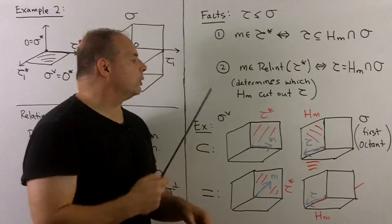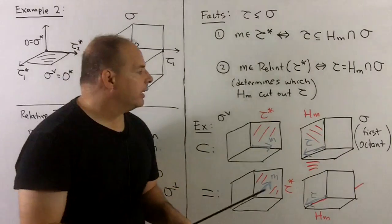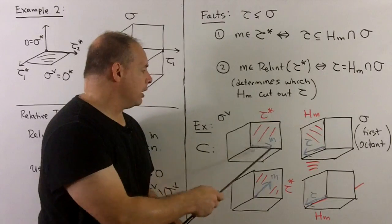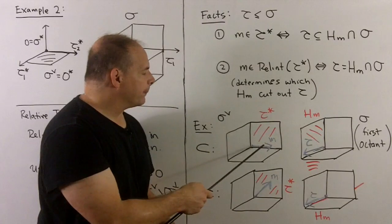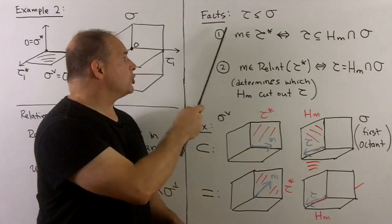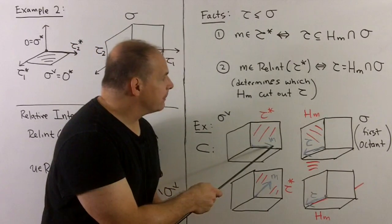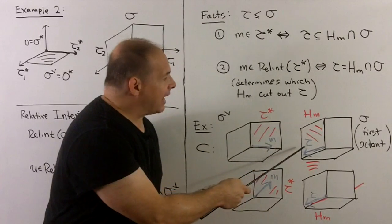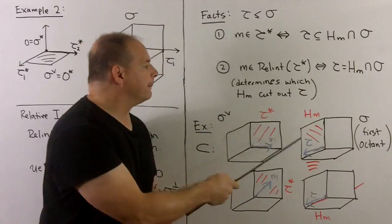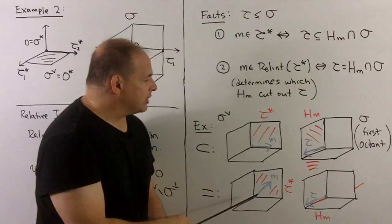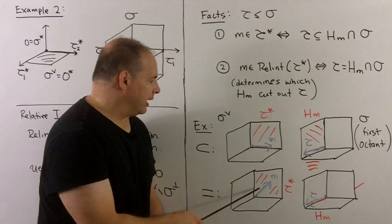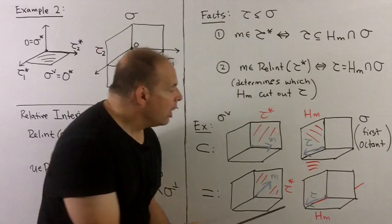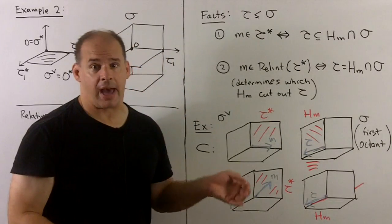To make sense of this with pictures, consider the first octant in three-space. Let tau be the ray in the direction of the positive x-axis. Then tau-star is the part of sigma-check in the y-z plane along the back. If we choose m in the direction of the positive y-axis, then H_m is determined by the x-z plane, and intersecting with sigma we see tau is strictly contained in H_m — that's condition one. For condition two, we pick m in the relative interior of tau-star, pointing into the plane. Then H_m is along a slant, and intersecting with sigma we get exactly the positive x-axis, which coincides with tau — giving condition two.